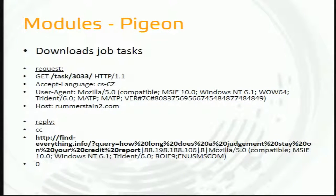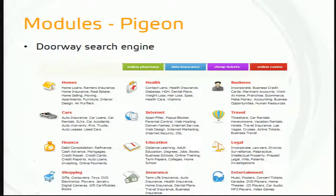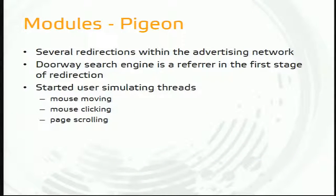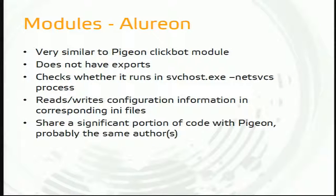The reply from the CNC uses a custom doorway search engine — in this case called 'findeverything.info' — a website containing many keywords and related topics. The search engine returns an HTML reply with a link plus a short JavaScript snippet that performs the click on the link. After this, the module starts several threads: some for mouse movement, some for clicking, and some for scrolling the page up and down.